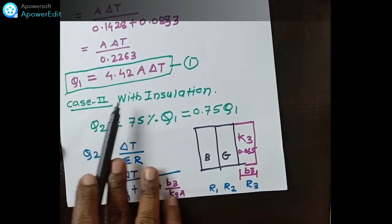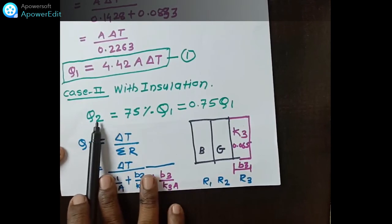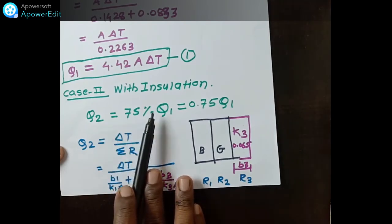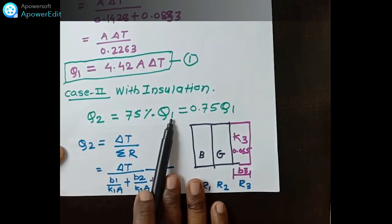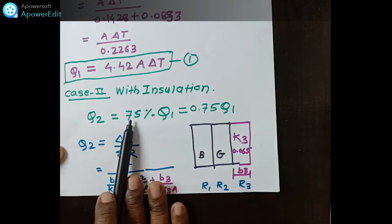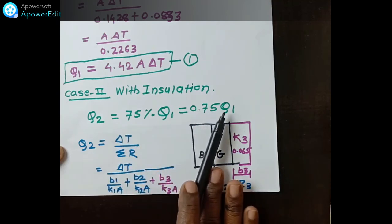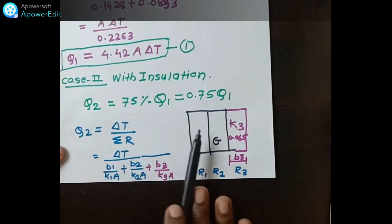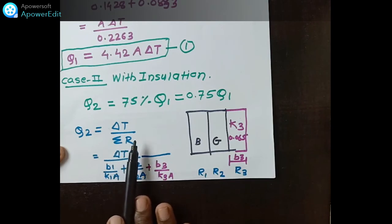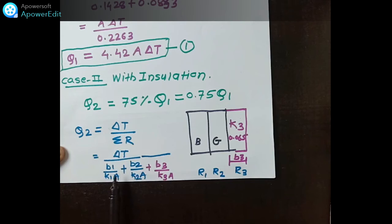For Case 2 with insulation, the heat loss Q2 will be reduced to 75% of Q1 without insulation. So Q2 = 0.75 × Q1. The formula for Q2 is ΔT divided by the sum of three resistances: B1/(K1·A) + B2/(K2·A) + B3/(K3·A). Substituting values: B1 = 0.1, K1 = 0.7; B2 = 0.04, K2 = 0.48; and B3 and K3 = 0.065 for the rockwool layer.